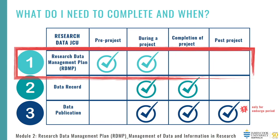Increasingly, funders require the RDMPs to be completed prior to the commencement of the research project to comply with their rules. It's also not a bad idea to have this completed and attached to any ethics application. It's important to note that we launched our new data repository platform, Research Data JCU, in January of 2021. So any projects commencing from 2021 onwards require a Research Data Management Plan, a data record, and a data publication. For example, if you are a HDR candidate and in 2021 are already partway through your research project, a data record and data publication is required, but you are not required to retrospectively complete a Research Data Management Plan.